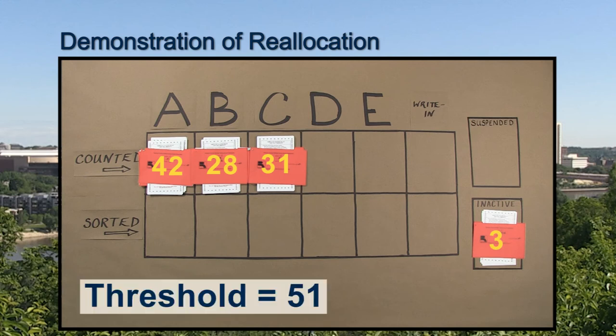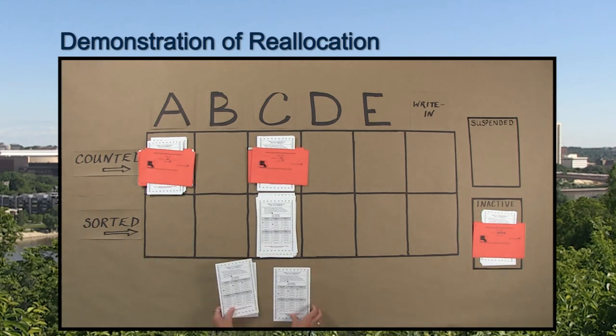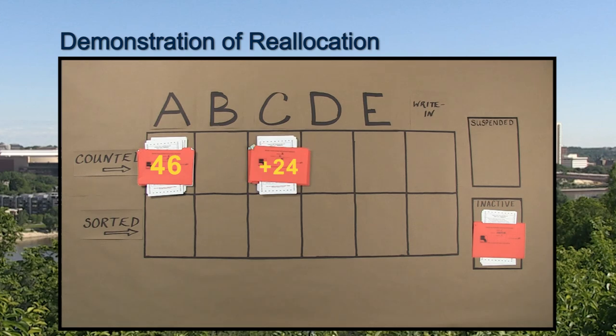Since no candidate has yet reached the threshold, another reallocation must occur. Because Candidate B has the fewest votes of the remaining candidates, their votes are reallocated. Then the sorted ballots are counted and added to the candidate's previous vote totals. Candidate A gained 4 votes and now has a total of 46 votes. Candidate C received 24 votes and has a total of 55 votes. Because Candidate C's vote totals surpass the threshold, Candidate C is declared the winner of the election.